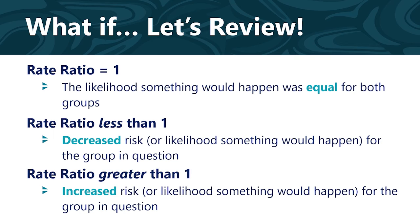What if your rate ratio is 1? That means that the risk or the likelihood that something would happen was equal for both groups. If it's less than 1, there was decreased risk or likelihood that something would happen for the group in question. If it's greater than 1, there was increased risk or likelihood that something would happen for the group in question.